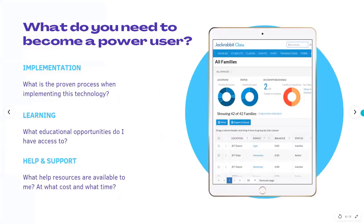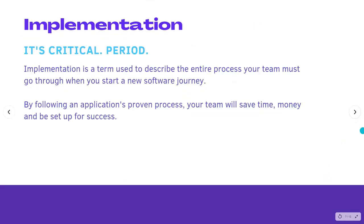Now that you know how you got here and where you want to go, we can really begin to look at what you need out of a system that you're going to become a power user of. The road to becoming a successful user of any application or class management system is paved in the answers to these following questions: What is the proven process when implementing a technology? What educational opportunities do I have access to? And what help and support are available to me at what cost and at what time?